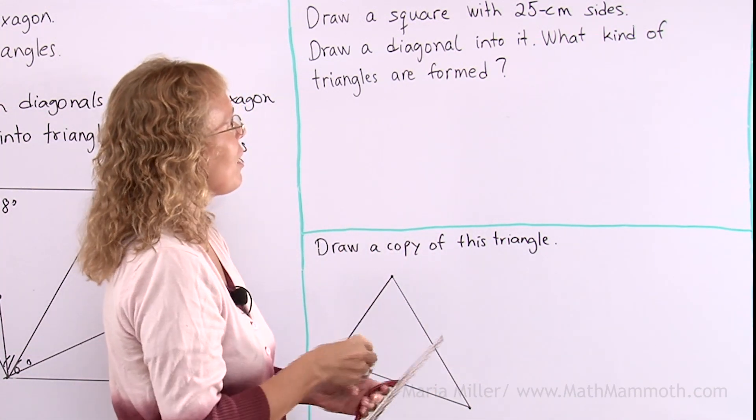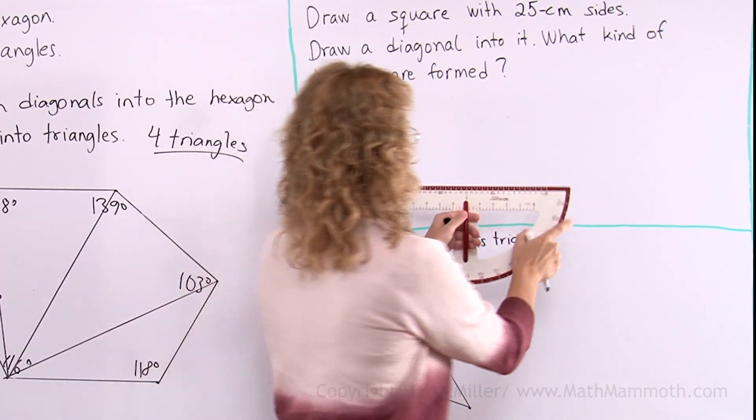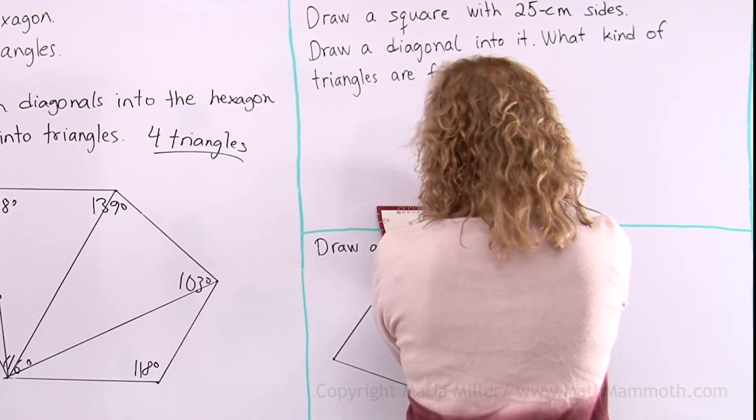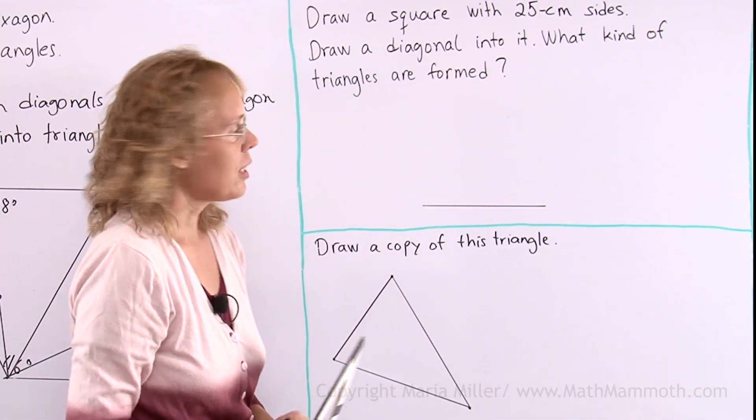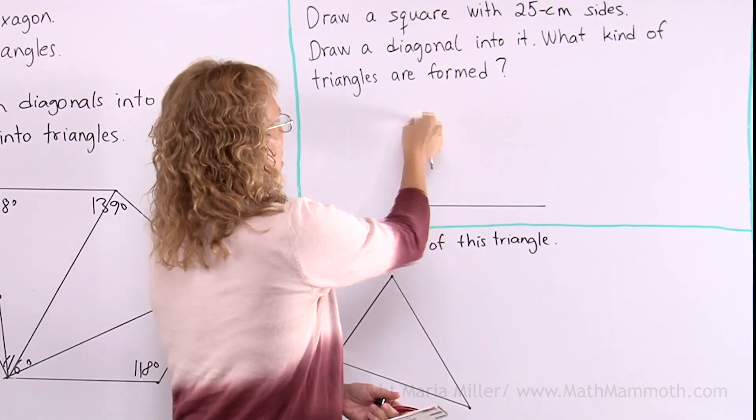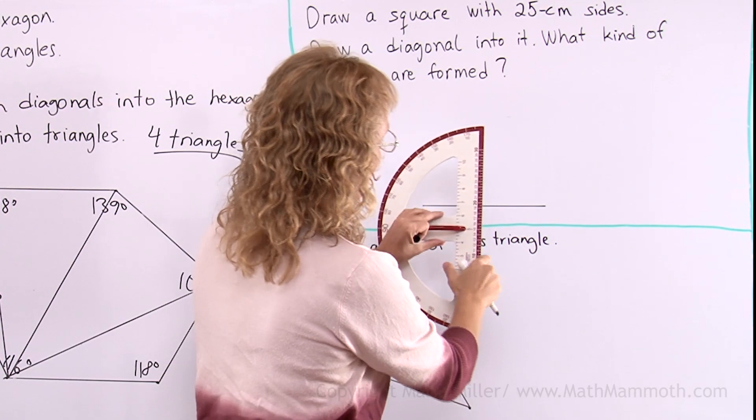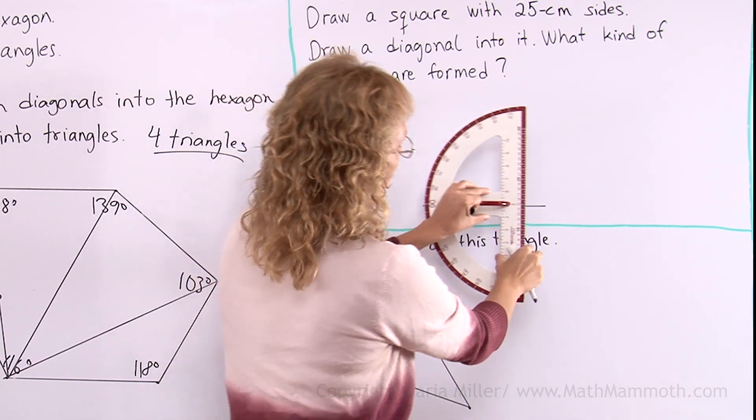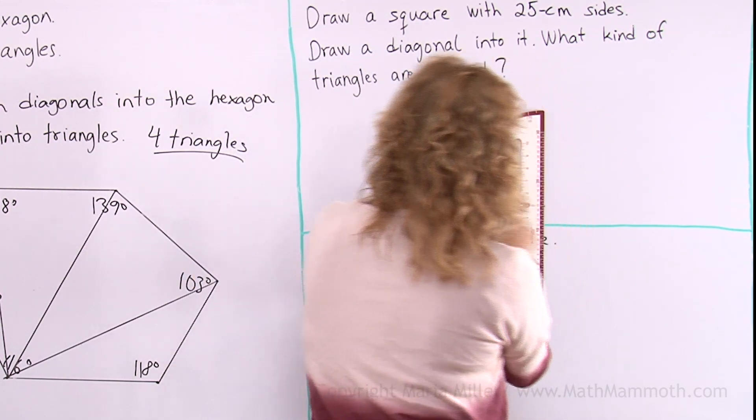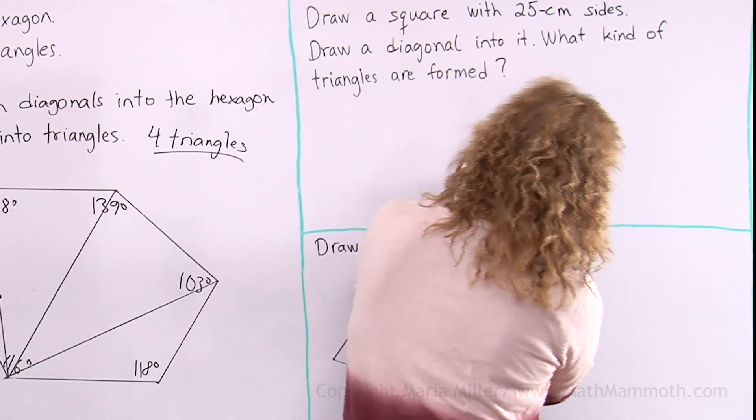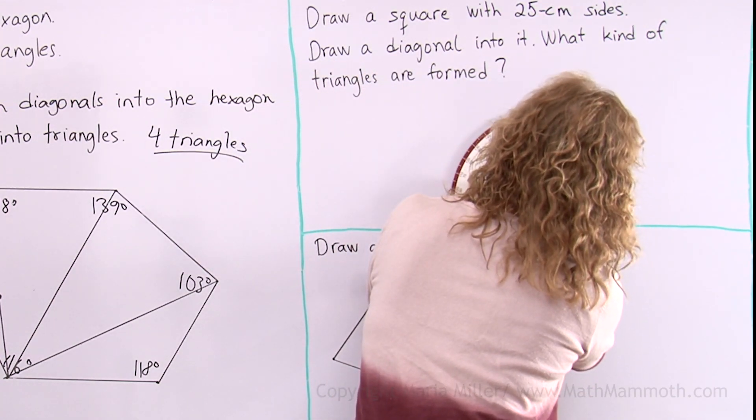I will draw a 25cm side first of all here. That's 25cm and now I will draw a right angle going up from here and then another from here using my protractor. I'm going to draw the line here and then line up this 90 degree mark with the midpoint here and that way I get an exactly right angle.